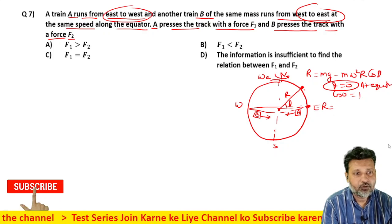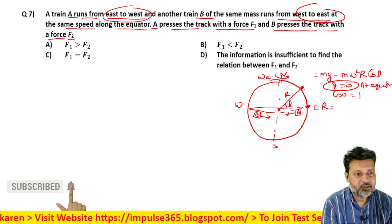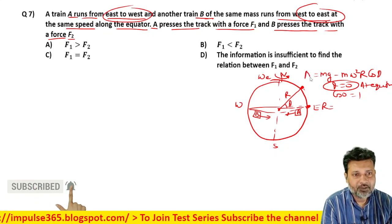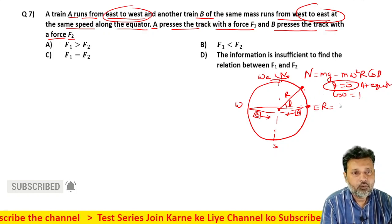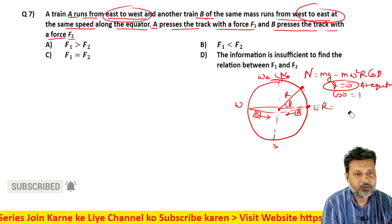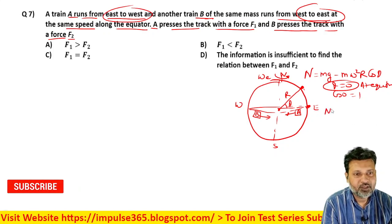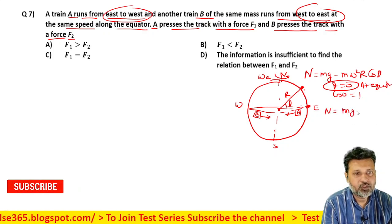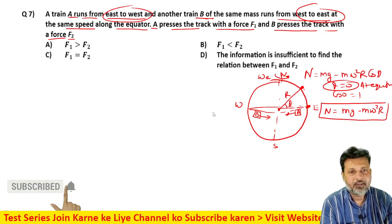Here we've used radius r. Let's denote normal reaction as N. This force applies. So normal reaction N equals mg minus m omega squared r. This is correct.